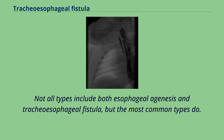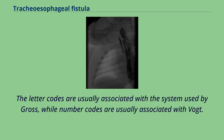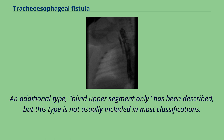Not all types include both esophageal agenesis and tracheoesophageal fistula, but the most common types do. The letter codes are usually associated with the system used by Gross, while number codes are usually associated with Vogt. An additional type — blind upper segment only — has been described, but is not usually included in most classifications.